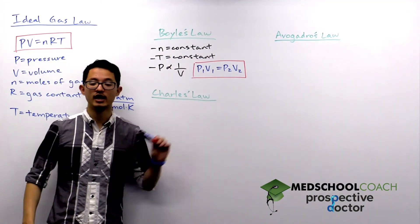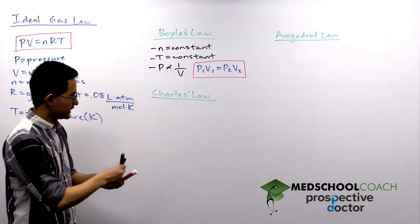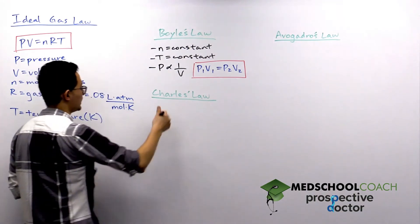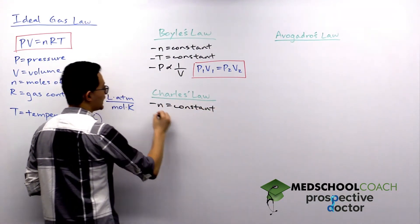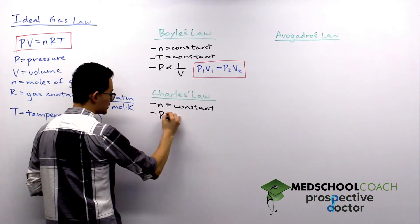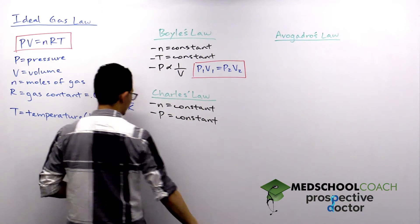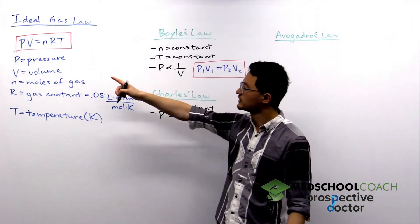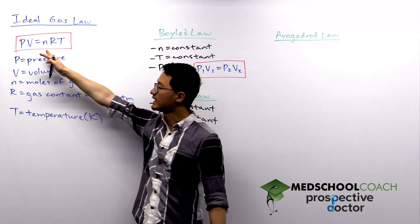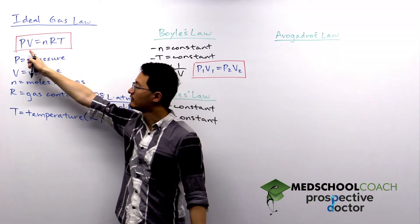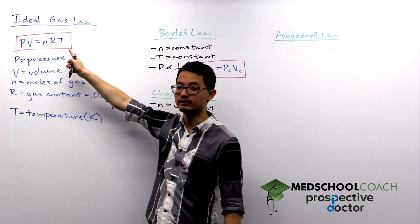Our next law is Charles' law. Charles' law looks at the ideal gas law when the moles of gas and pressure are both constant. In this case, volume is directly proportional to temperature — that's the important relationship here.